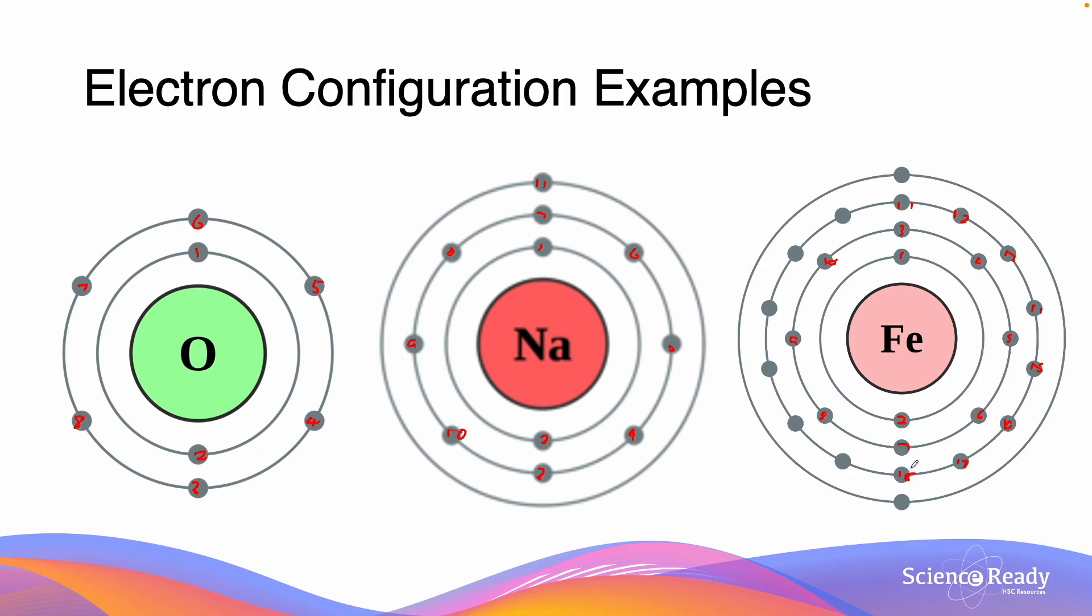Now if we remember, rule 3 said after we fill up 8 electrons in shell 3, we continue on to shell 4, and we fill up 2. So the 19th electron will go here, and the 20th electron will go here.